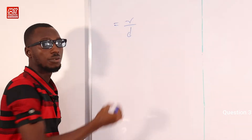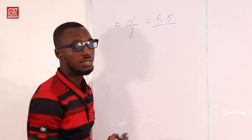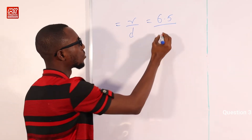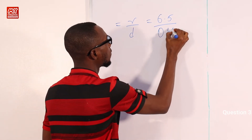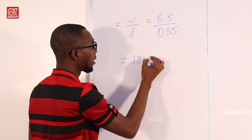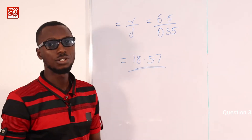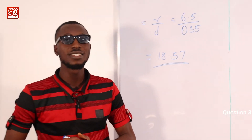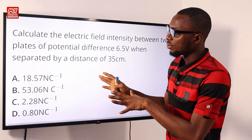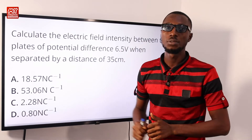On the whiteboard: electric field E = V/d. Voltage is 6.5 and distance is 35 centimeters, converted to 0.35 meters. Carrying out this operation gives approximately 18.57. Attaching the unit and going back to the screen, we see option A for 18.57, so option A is correct.